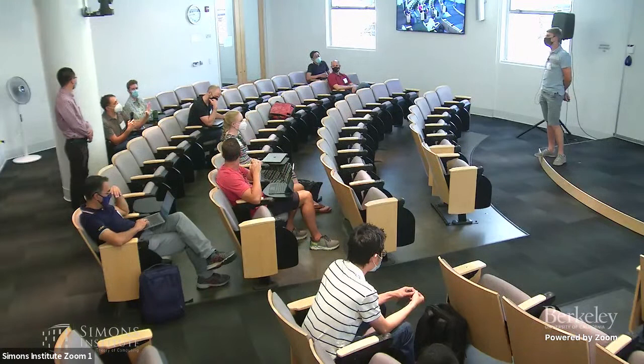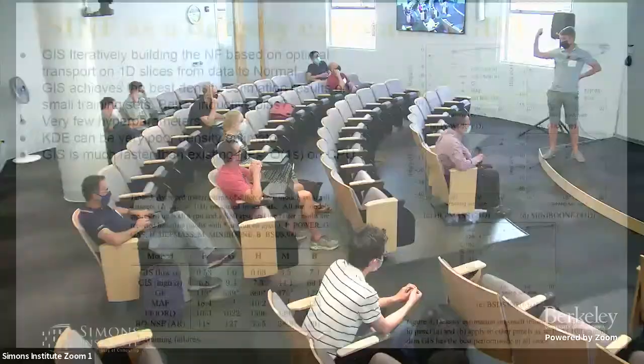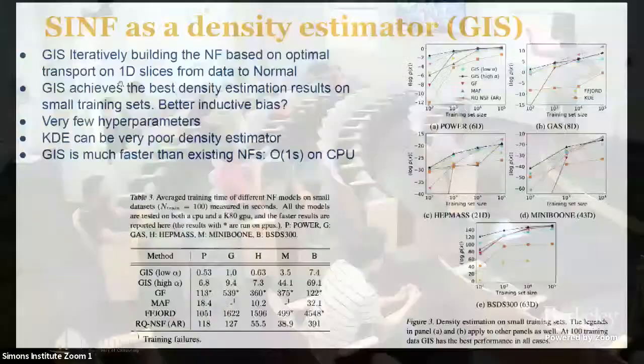Now let's look at the density estimation results. On the UCI datasets with 100,000 samples, ranging from 6 to 63 dimensions, this method is not necessarily state of the art on the full dataset. I have two versions of our method: one with low regularization, which is very fast, and one with higher regularization, which is slightly slower. They do pretty well — maybe not quite state of the art at maximum data size, but at low data sizes of 100 to 1000, our method is always the best.